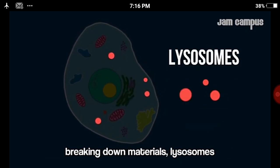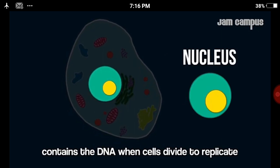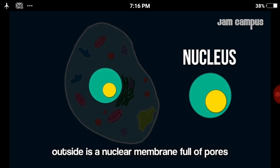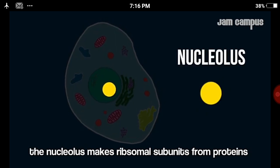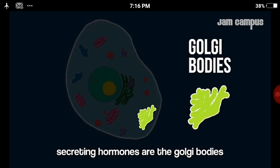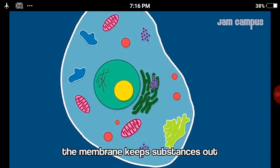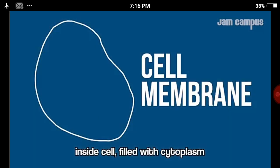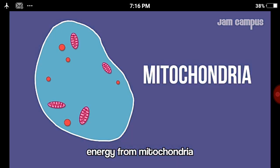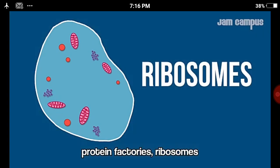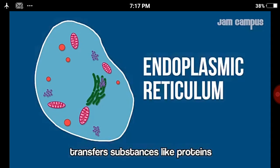Breaking down materials are the lysosomes. The nucleus controls the cell kind of like a brain — it contains DNA. When cells divide to replicate, it has a nuclear membrane full of pores. The nucleus makes ribosomes. Secreting hormones are the Golgi bodies. Each unit of a cell is an organelle. The membrane keeps substances in or out. The cell is filled with cytoplasm. Lysosomes help break things down. Energy comes from mitochondria. Ribosomes are protein factories. The endoplasmic reticulum transfers substances like proteins.